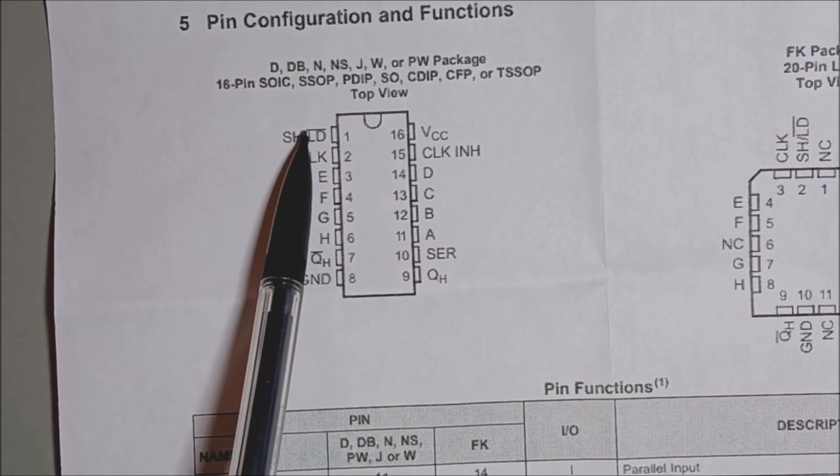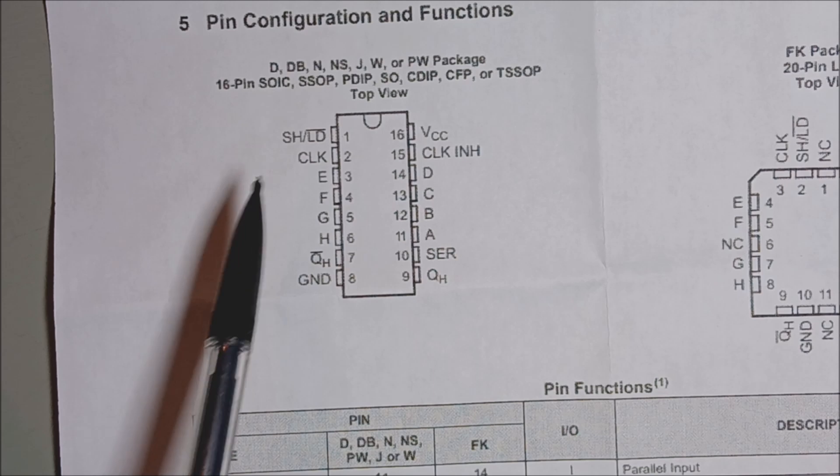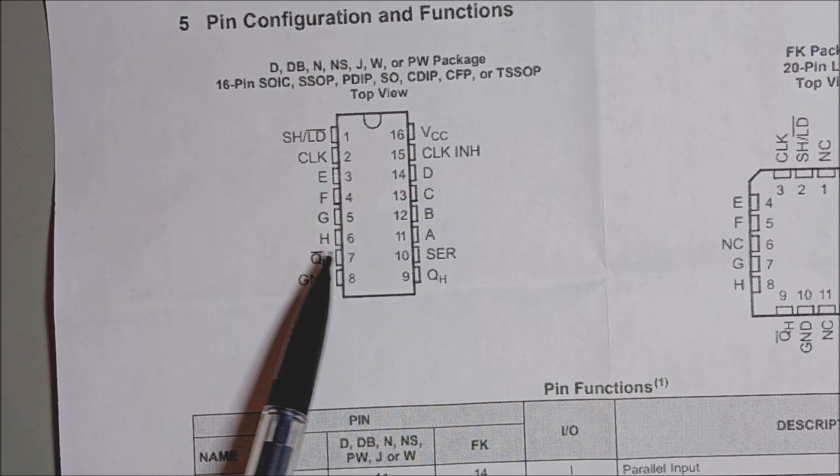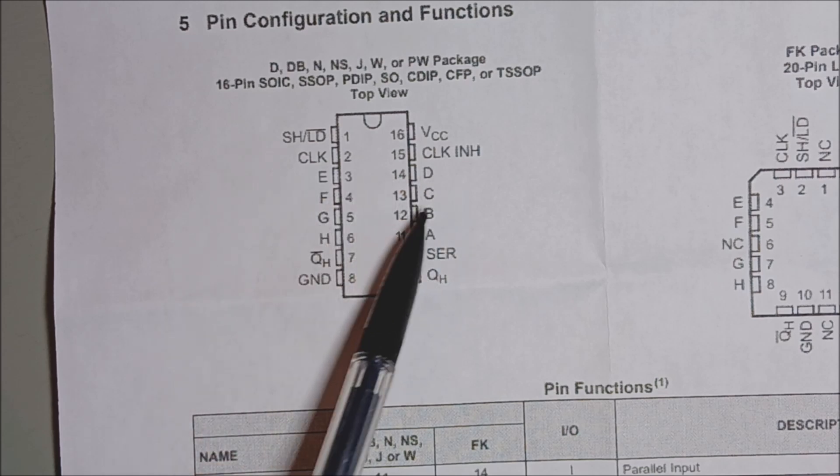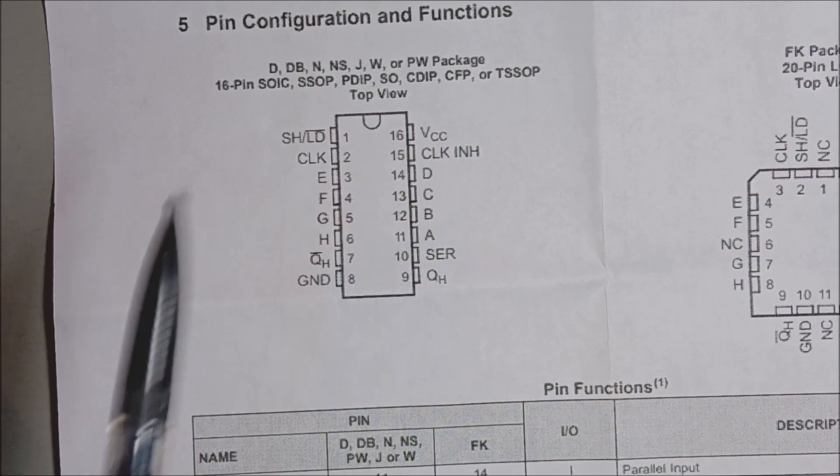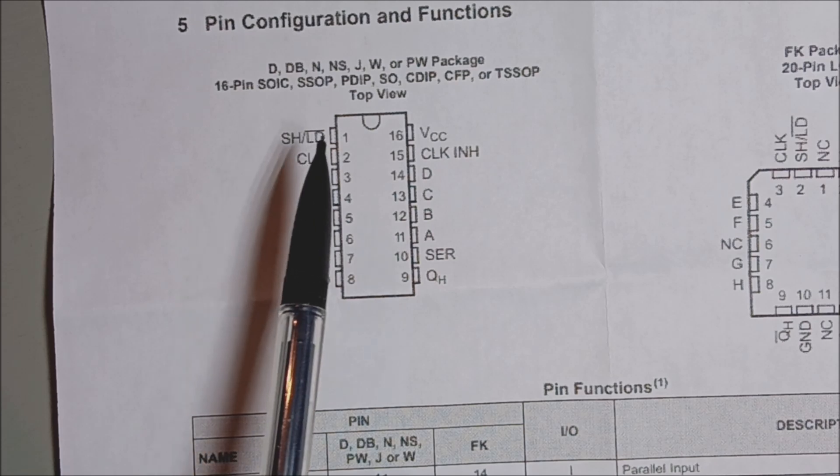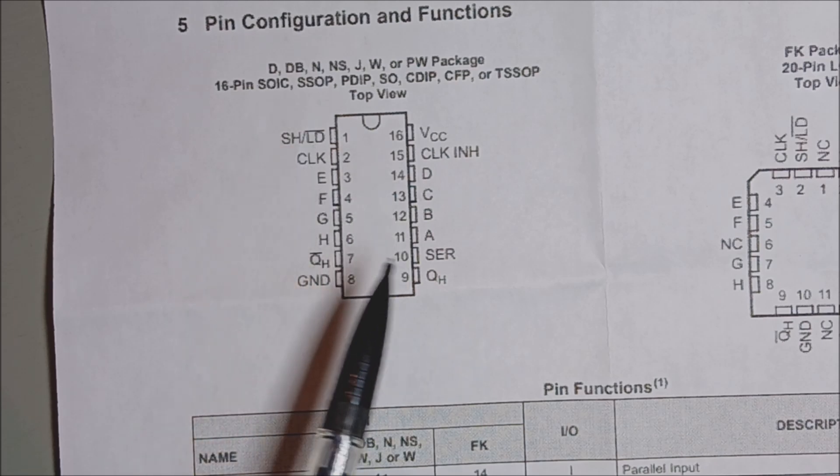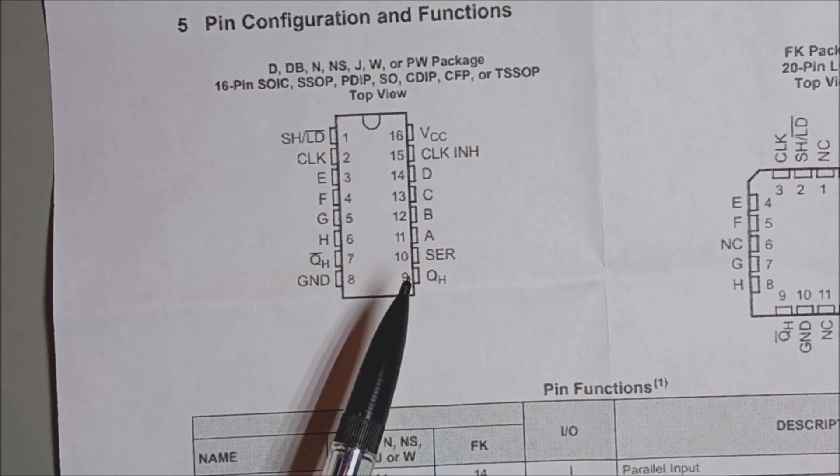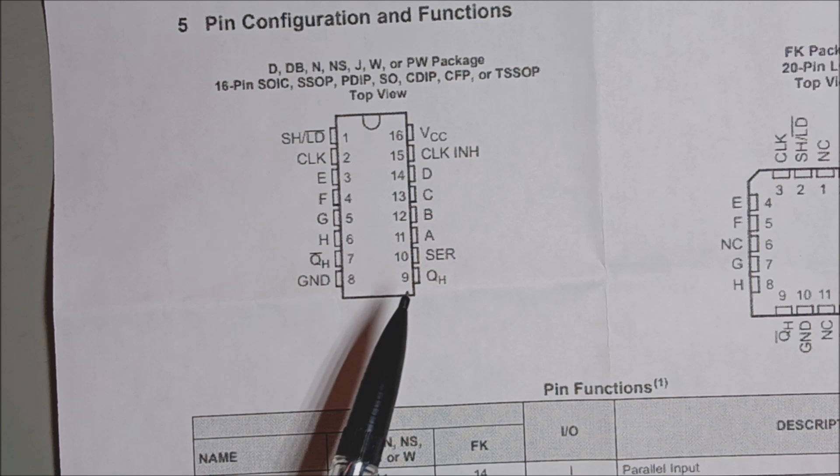So step one is to send a low signal on the shift load. This will capture all of the logic highs and lows you're inputting on your data pins A to H. And then having hit shift load, sending it a low, it'll actually automatically send out the most significant bit of your data on the serial output line.